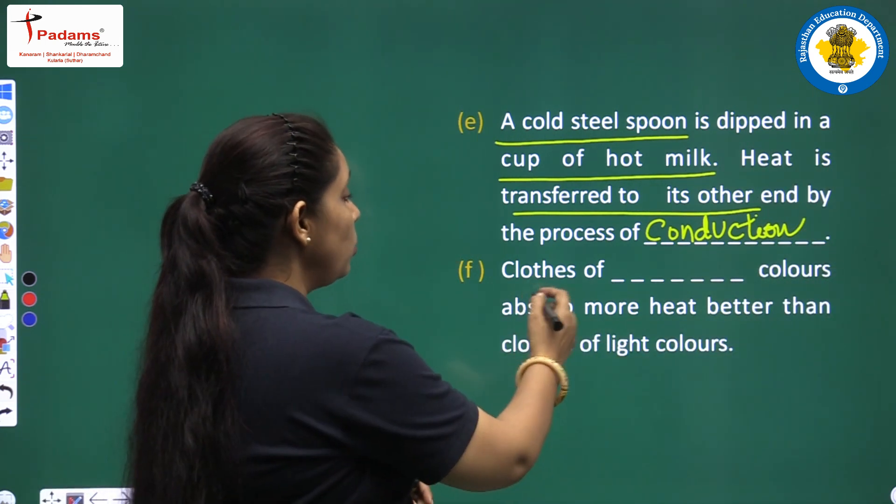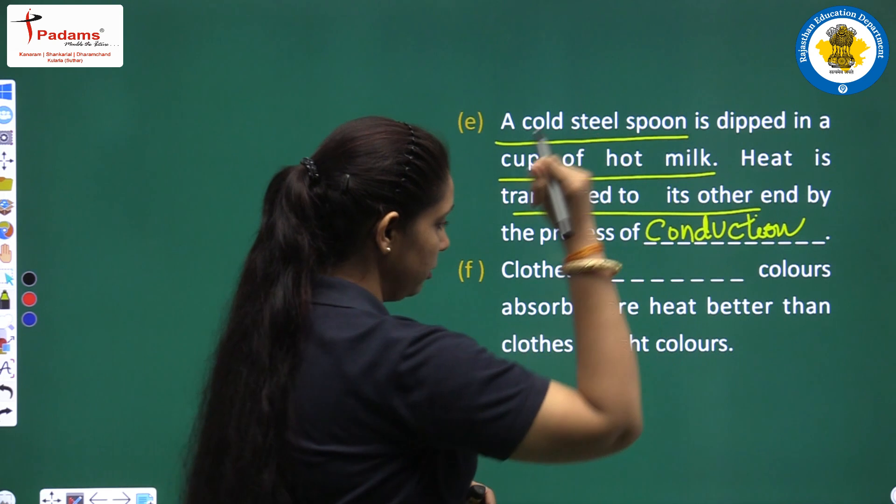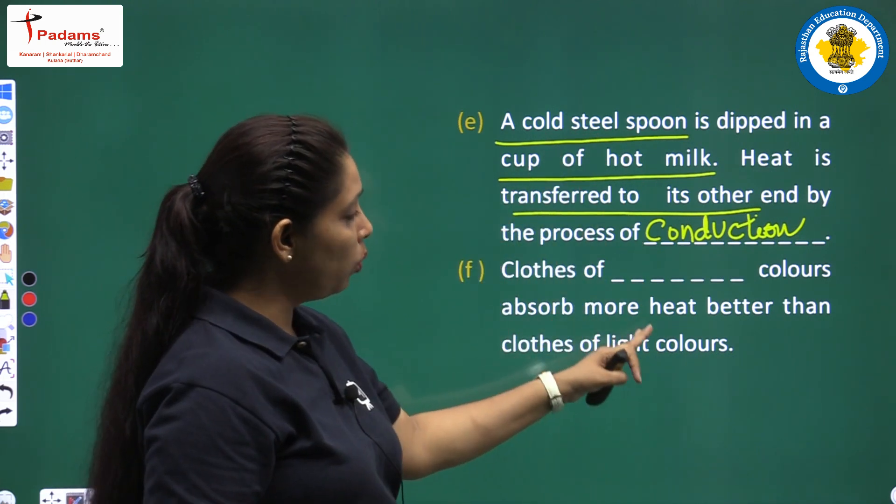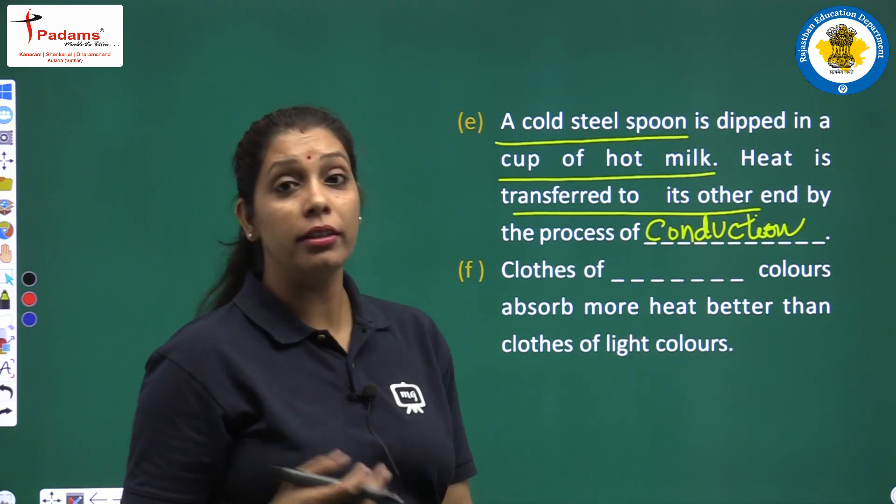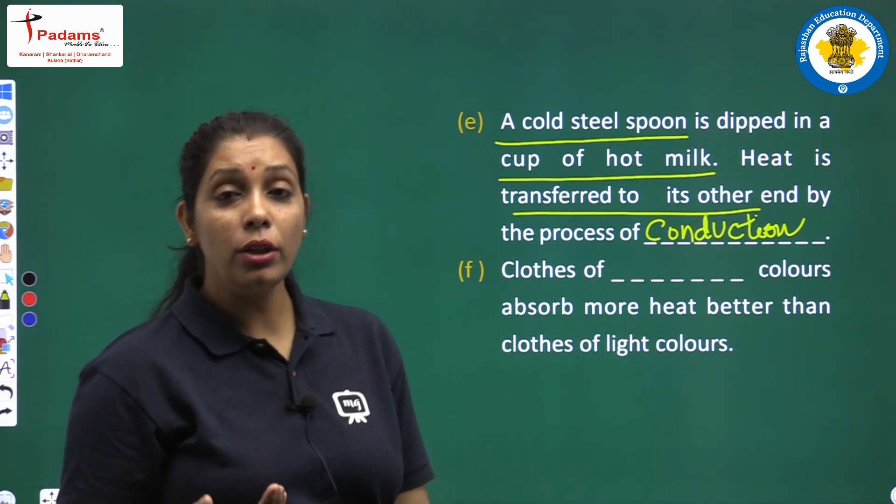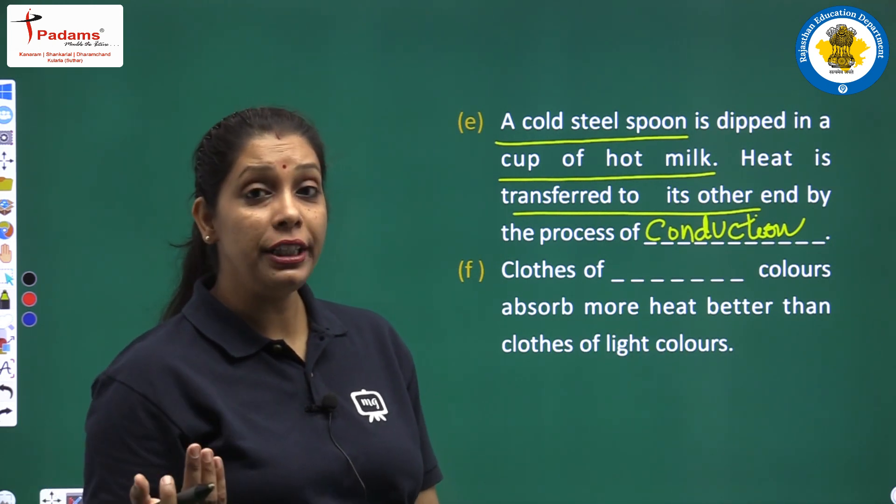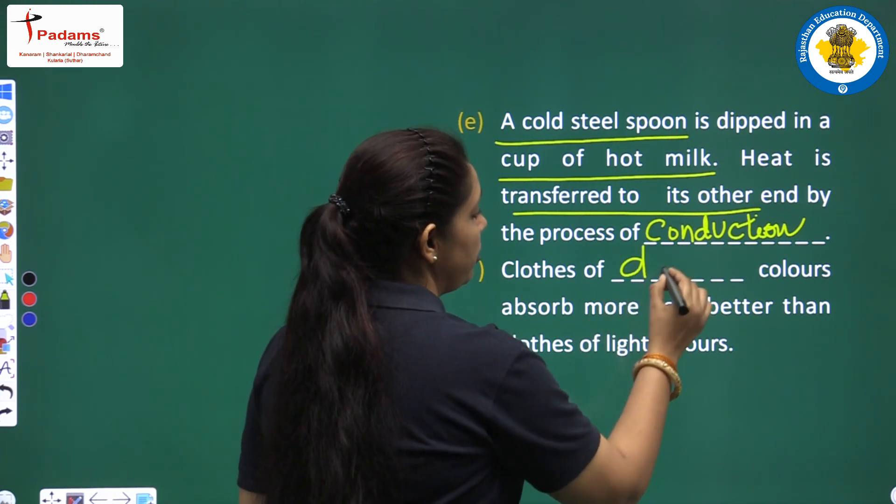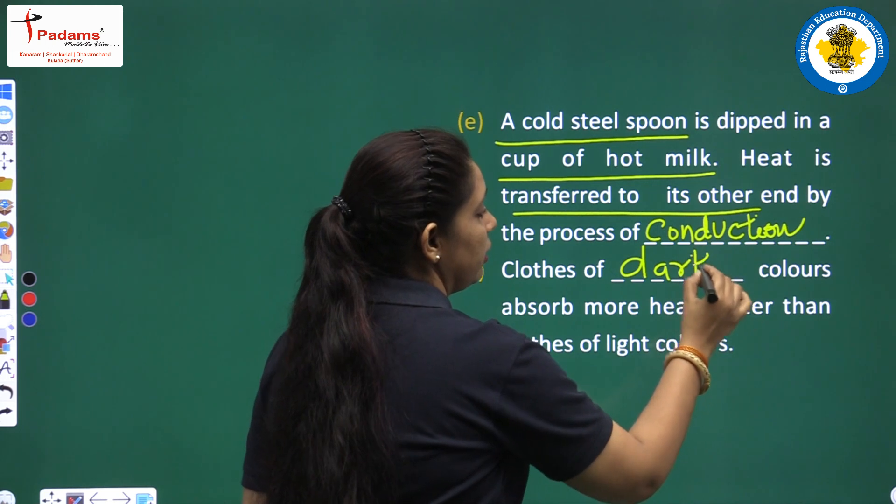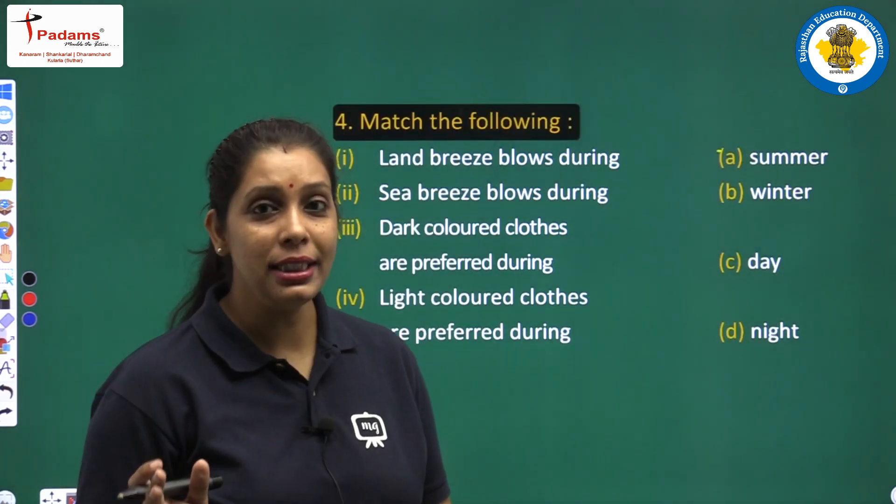Next one: clothes of dark colors absorb more heat better than clothes of light colors. Which color clothes are the good absorber of heat? They are dark. Write down dark.